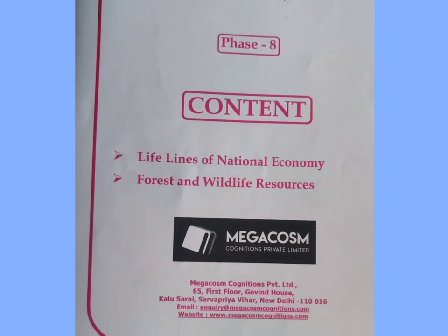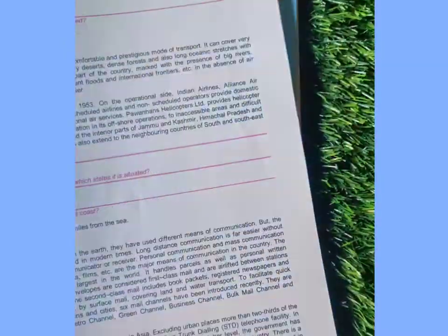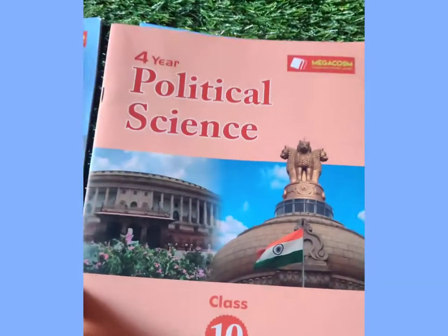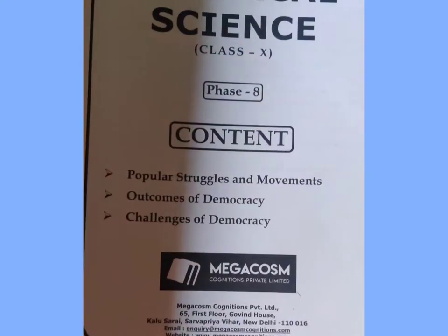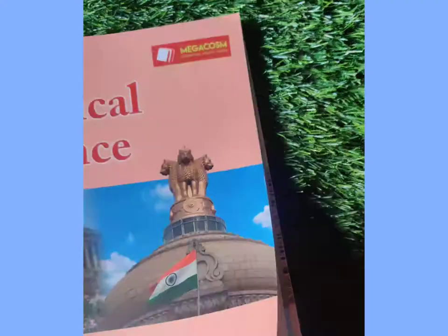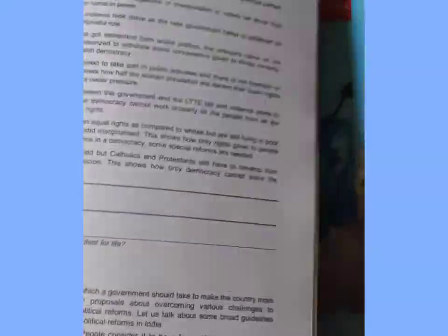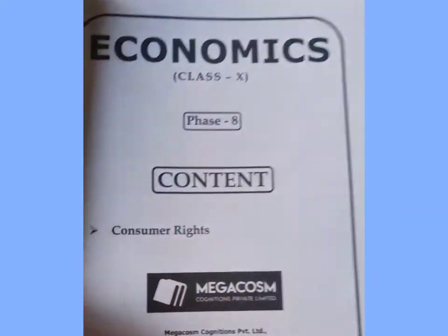Now this is the Geography book. In Geography, the topics covered are Lifeline of National Economy and Forest and Wild Resources. Similarly here also you have the theoretical part, solved problems, and unsolved problems. Now this is the Political Science book. Topics covered in it are Popular Struggle and Movements, Outcomes of Democracy, and Challenges of Democracy. Similarly here also this same pattern is followed — theoretical part first, then solved problems and unsolved problems.